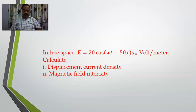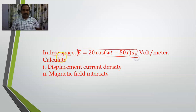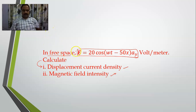Coming to question number 1: it has been given that in free space the electric field vector has a specific magnitude, and you are supposed to calculate the displacement current density and magnetic field intensity. So you need to compute displacement current density Jd and the magnetic field intensity H, given this particular E. How do we compute these two from the electric field intensity?